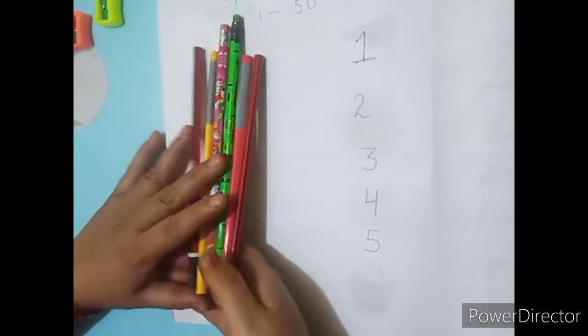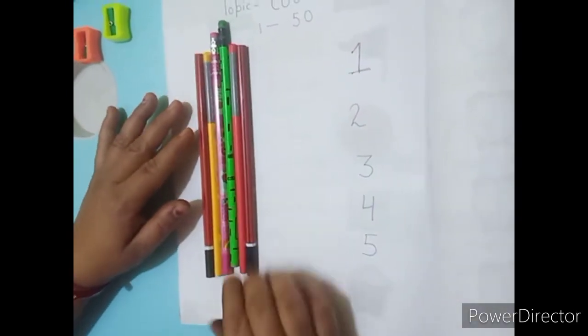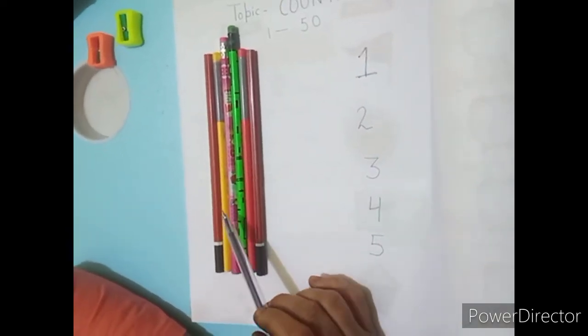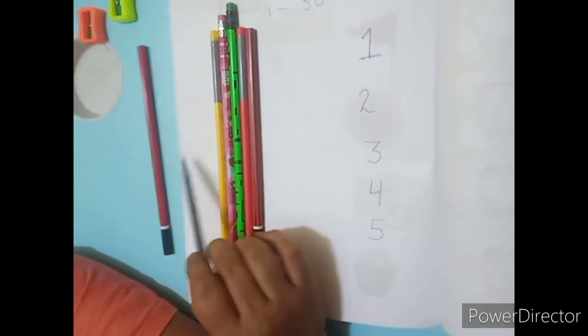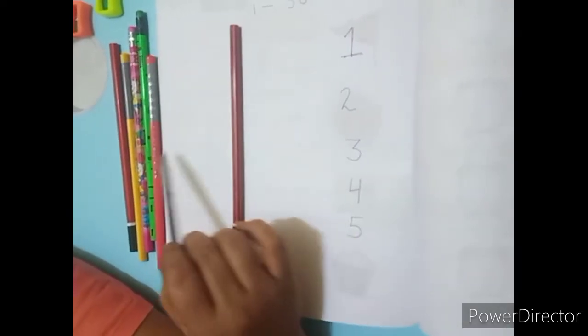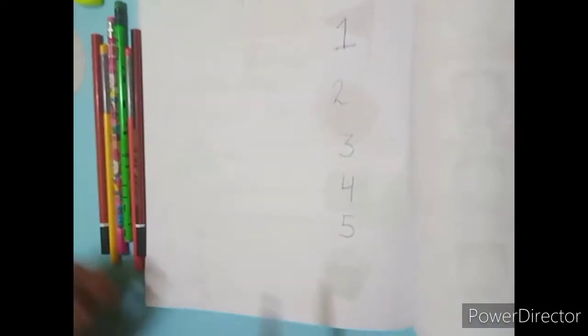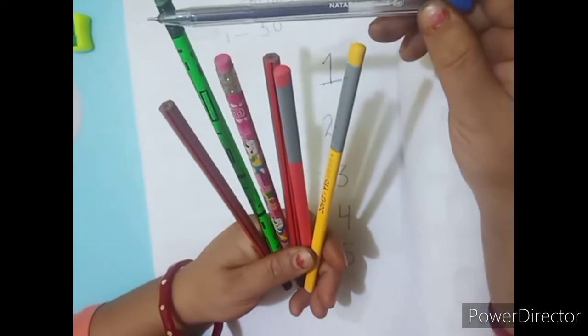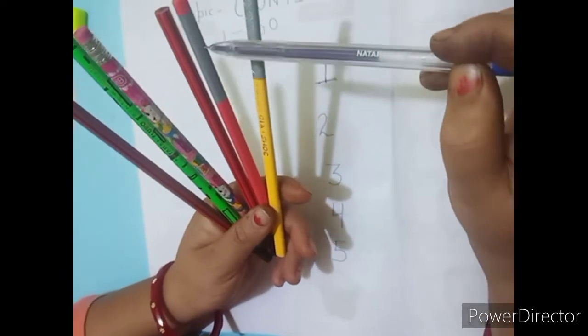Very good. Now I am showing your next object — again pencils. Look here, these are pencils. Count again: one, two, three, four, five, six. How many pencils are here? Six. Repeat: one, two, three, four, five, six. Now you have to write six.